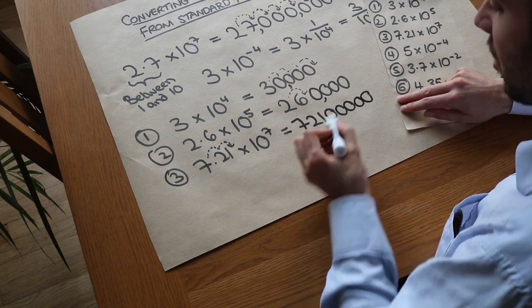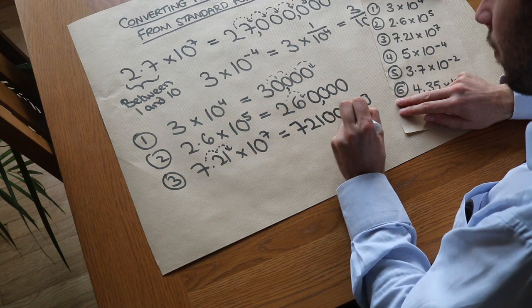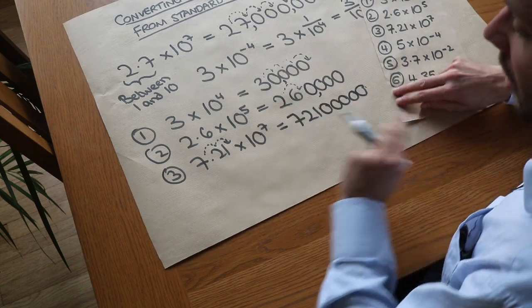And you can always check by just counting the moves. So it's here, once, twice, three times, four times, five times, six times, seven times. It is right.